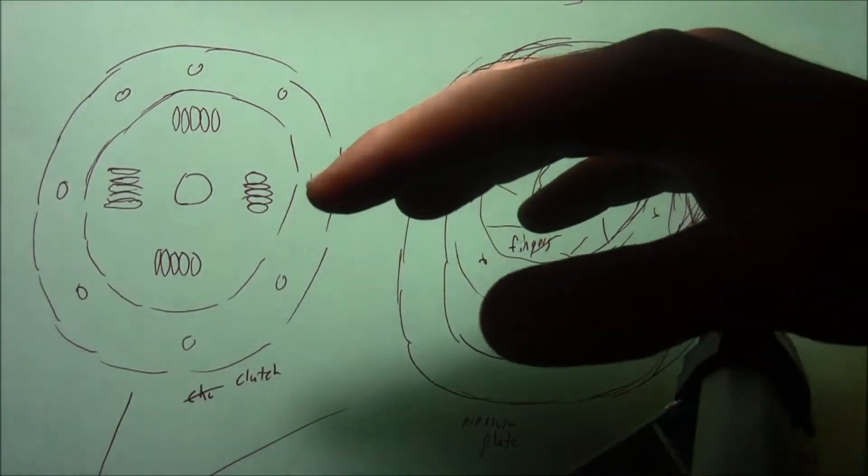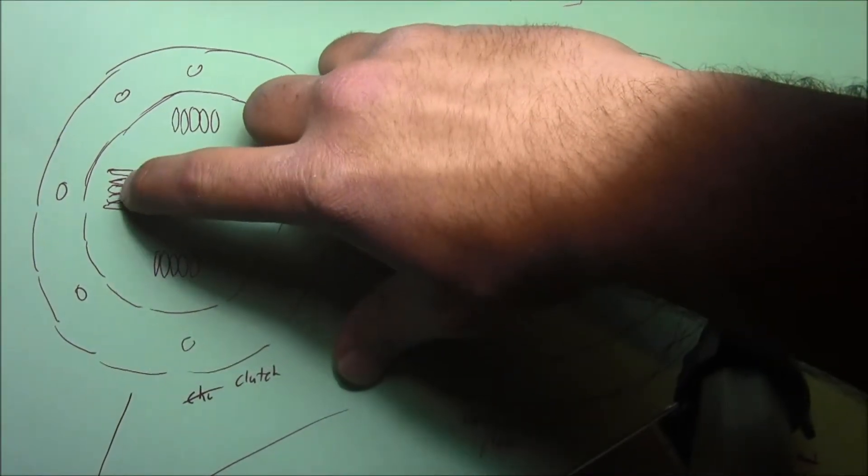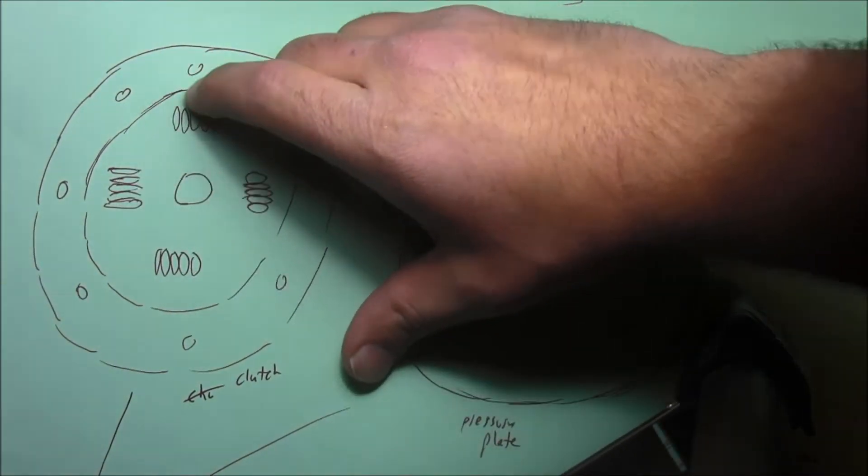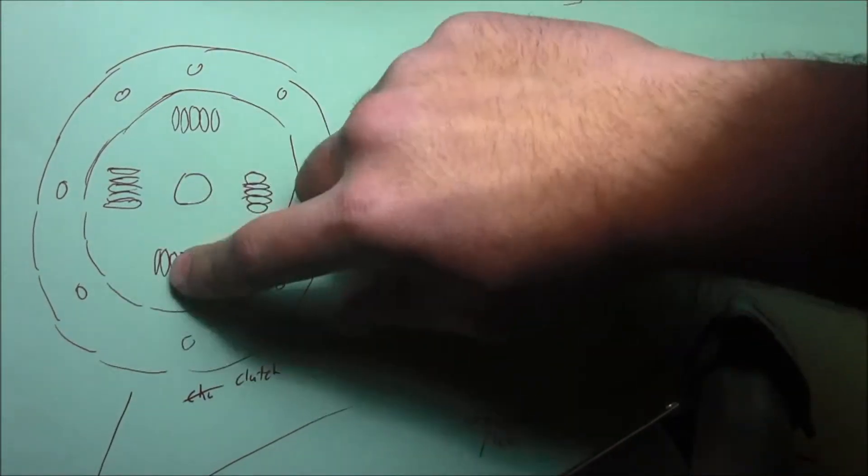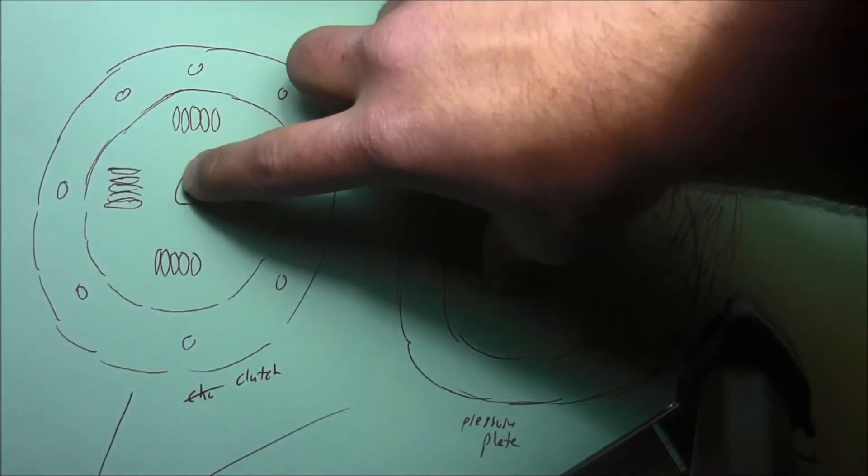Now in this drawing here's your clutch and this little mechanism right here barely separates your pressure plate from your clutch. It gives it a slipping effect.